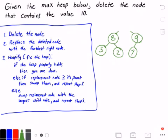We're deleting the node that contains the value 10. Now in step two, we want to replace the deleted node with the furthest right node, so that's the node that's furthest down and to the right. In this case it's the node that contains the value seven, so let's go ahead and replace the root node with the node that contains the value seven. And of course we're going to get rid of that node down below.